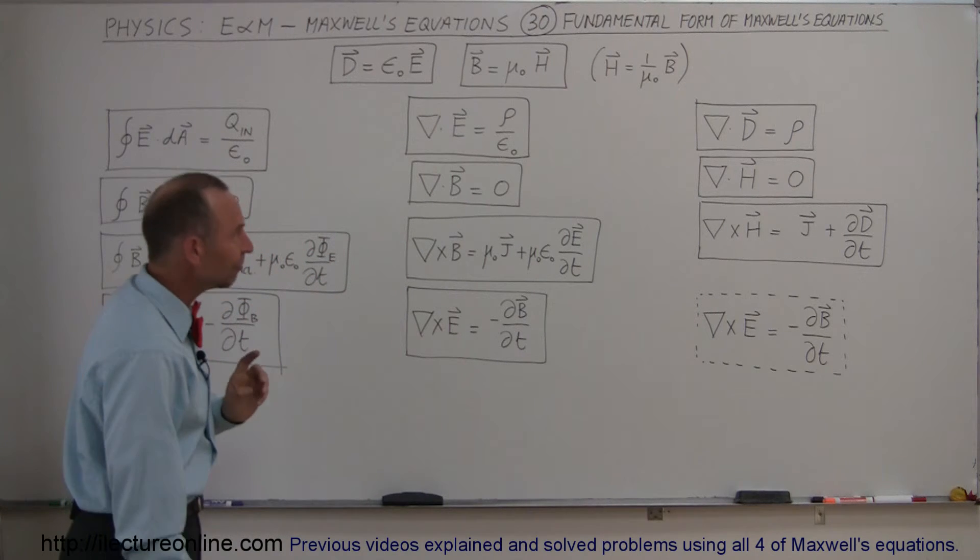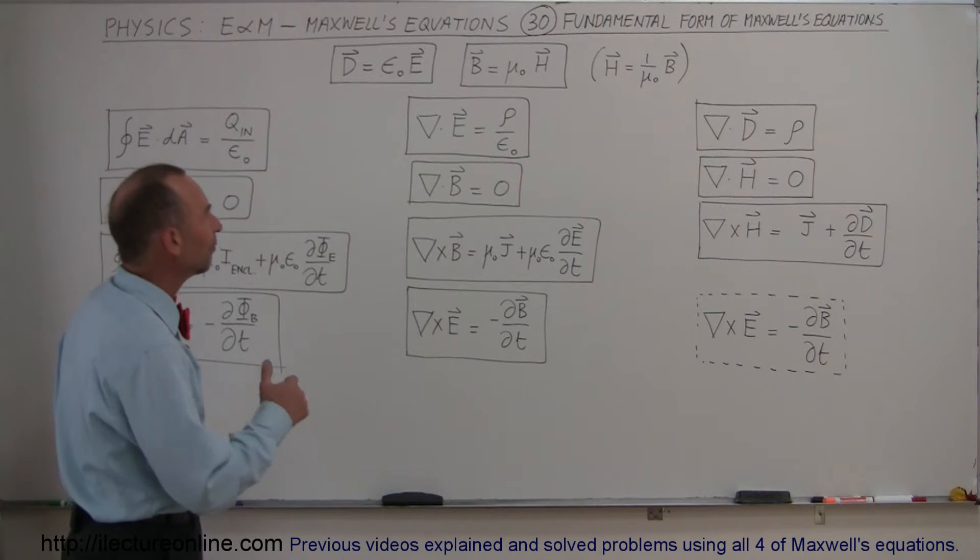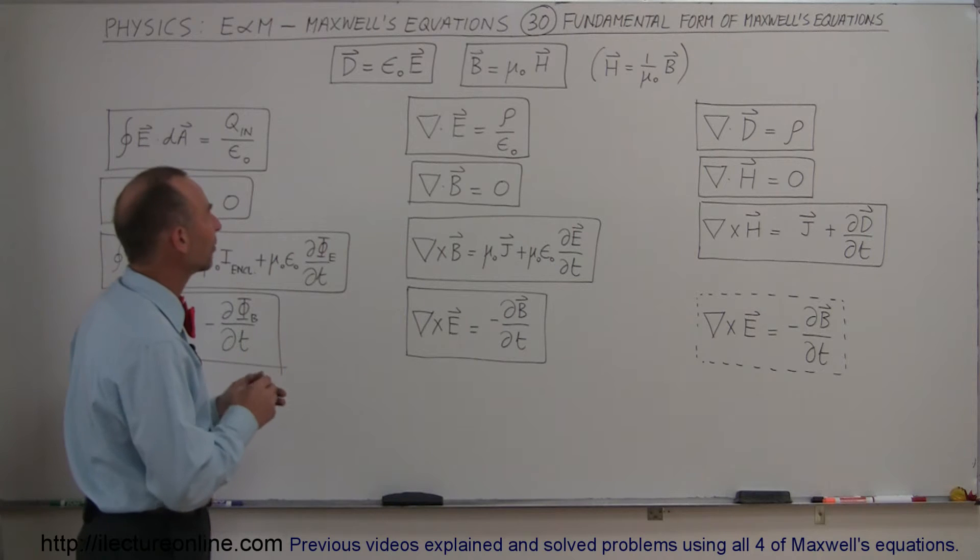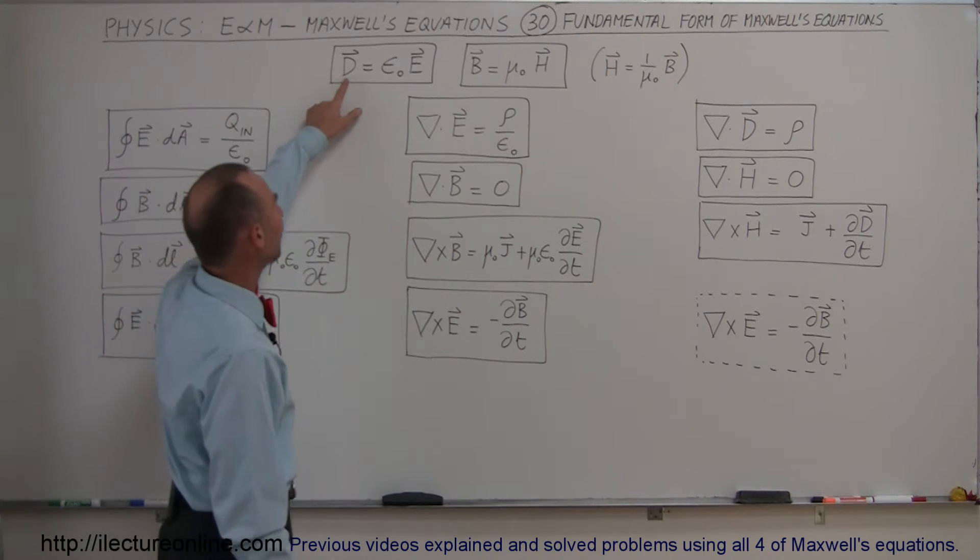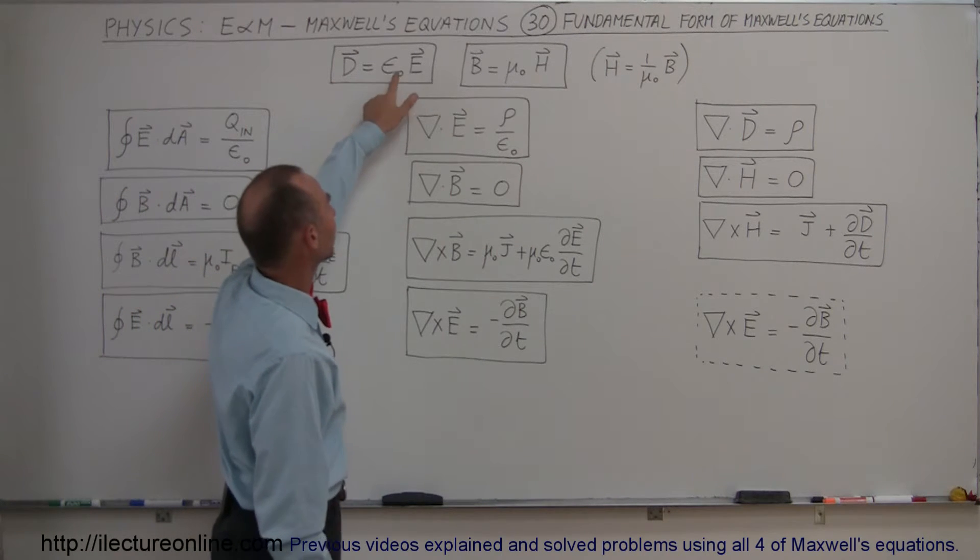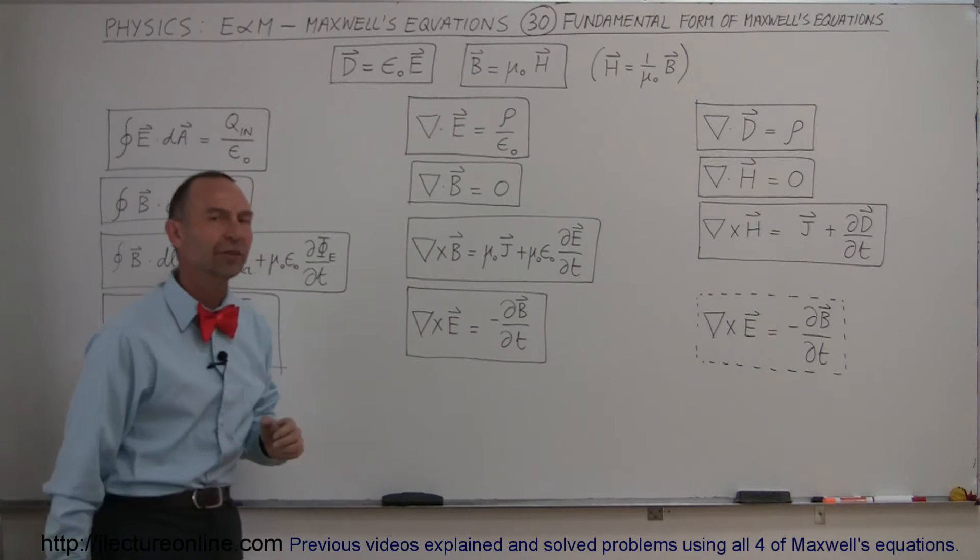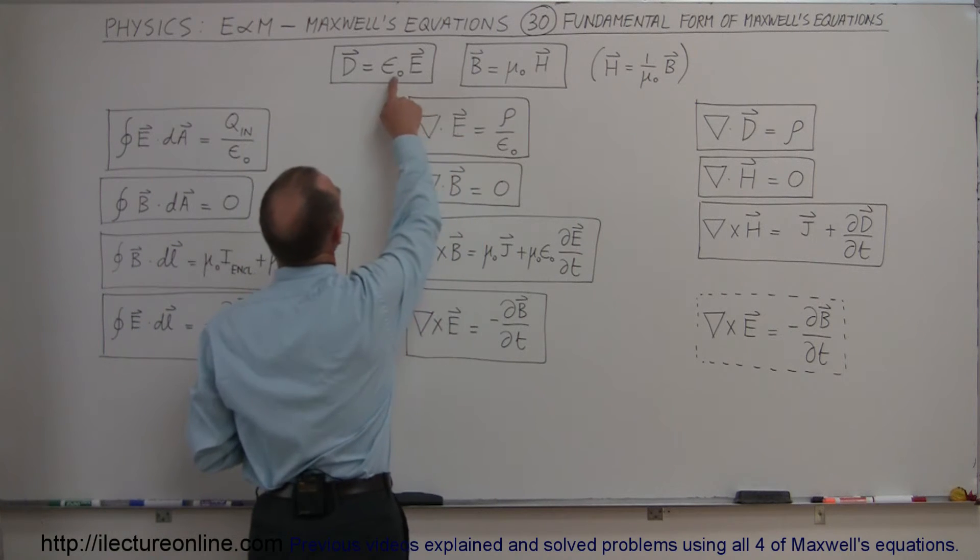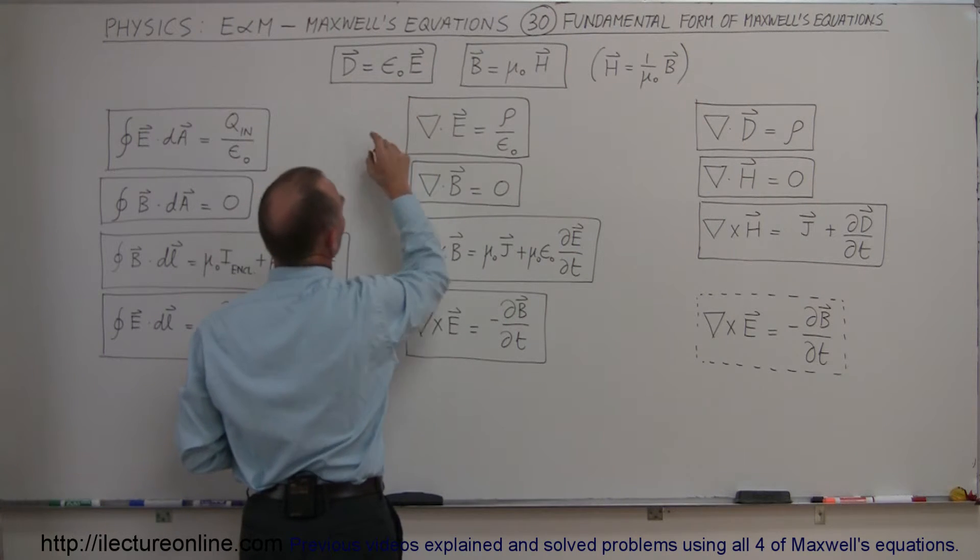Now, what they have done is they have made some different variables to represent the electric field and the magnetic field. For example, they came up with the D field. The D field is simply the electric field times the permittivity of free space. And if you then replace the E field by the D field, notice that E is equal to D divided by epsilon sub naught.